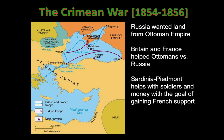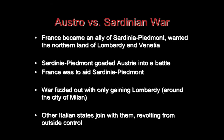Sardinia Piedmont is not militarily significant — it's about getting France's help. They want France as an ally so they could goad Austria into war. This is called the Austria-Sardinian War. The Sardinians goad Austria into battle; France is supposed to help Sardinia Piedmont, which she does, but then France gets a little wishy-washy and backs out. Because of this, the Sardinian Piedmontese were only able to gain the state of Lombardy in the north, not Venetia around the city of Venice. Several northern Italian city-states also join with Sardinia Piedmont.